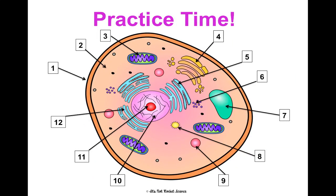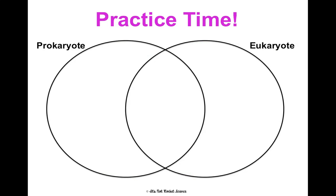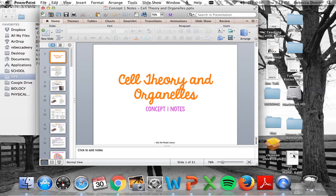Take a minute to practice labeling the animal cell diagram, then do the same with the plant cell diagram, and go back to see how you did. As a summary for your notes, compare and contrast prokaryotic cells with eukaryotic cells, and animal cells with plant cells, to make sure you have them well differentiated. And that's concept one: cell theory and organelles.